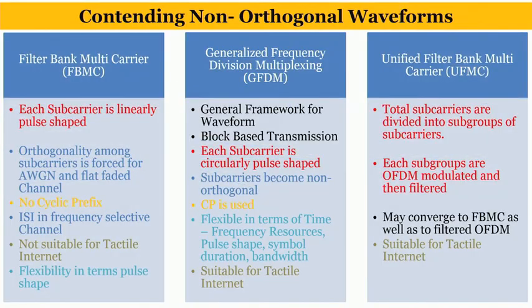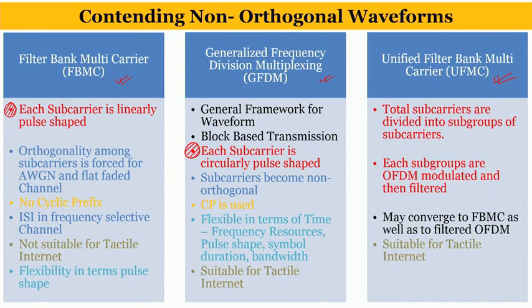Now we get into the discussion on comparison of the different waveforms. We have three important waveforms: filter bank multi-carrier (FBMC) on the left, then generalized frequency division multiplexing (GFDM), and unified filter multi-carrier (UFMC). FBMC has very good pulse shaping where each subcarrier is linearly pulse shaped, whereas in GFDM each subcarrier is circularly pulse shaped — that is where one would compare them against each other.